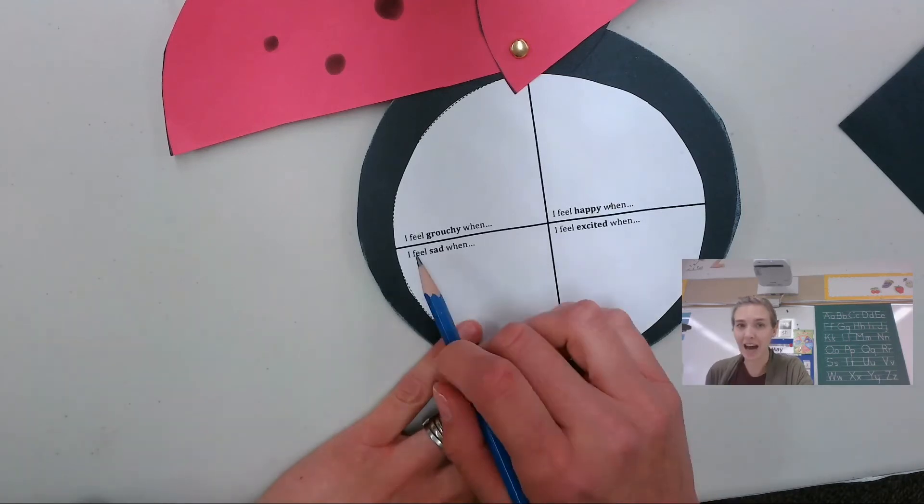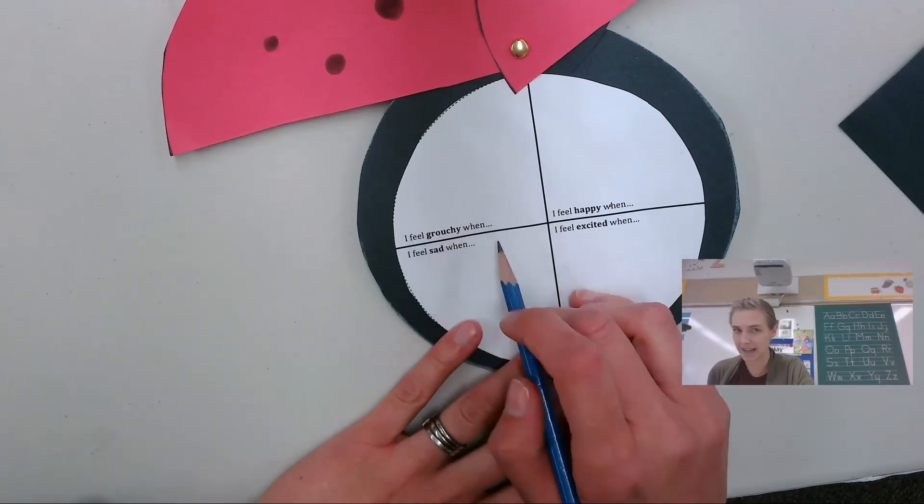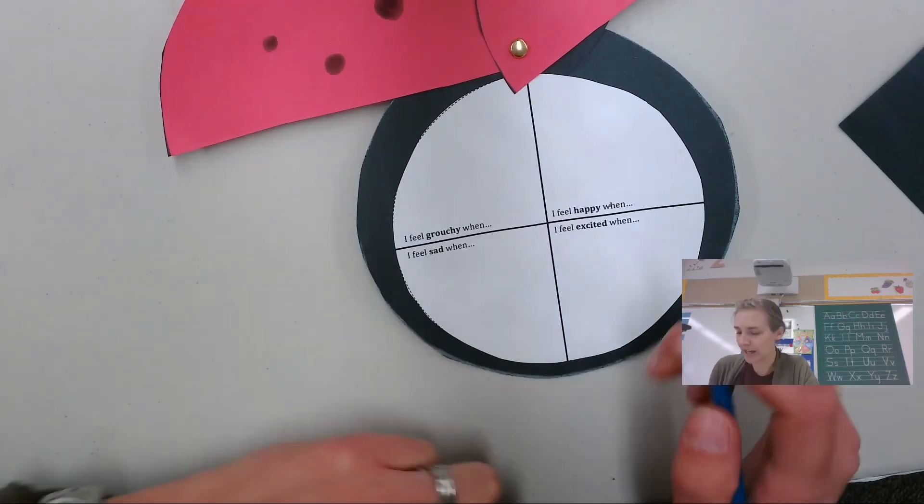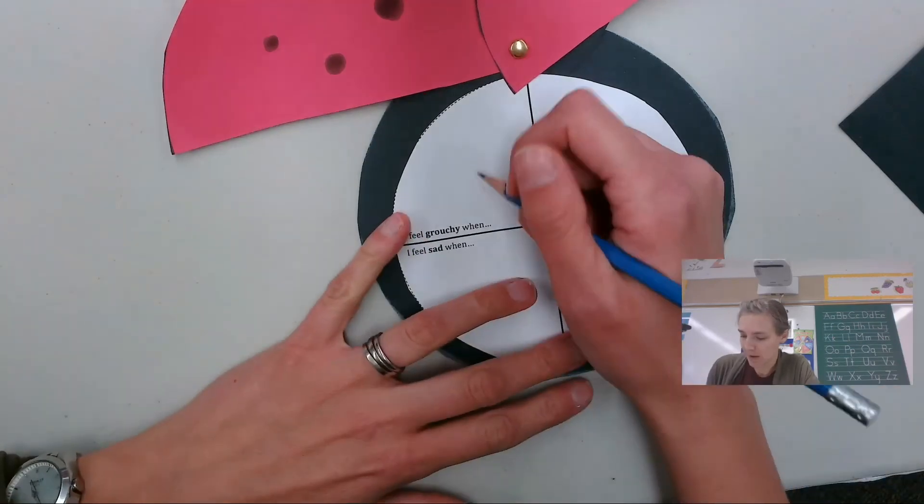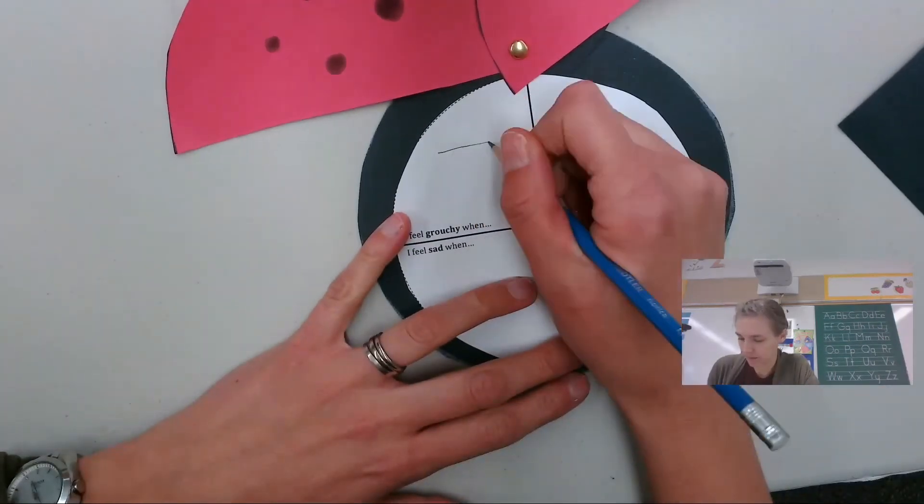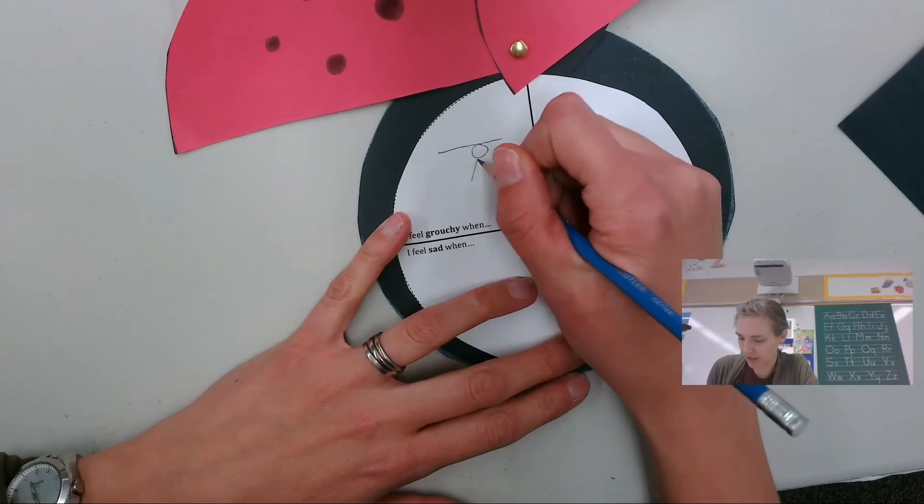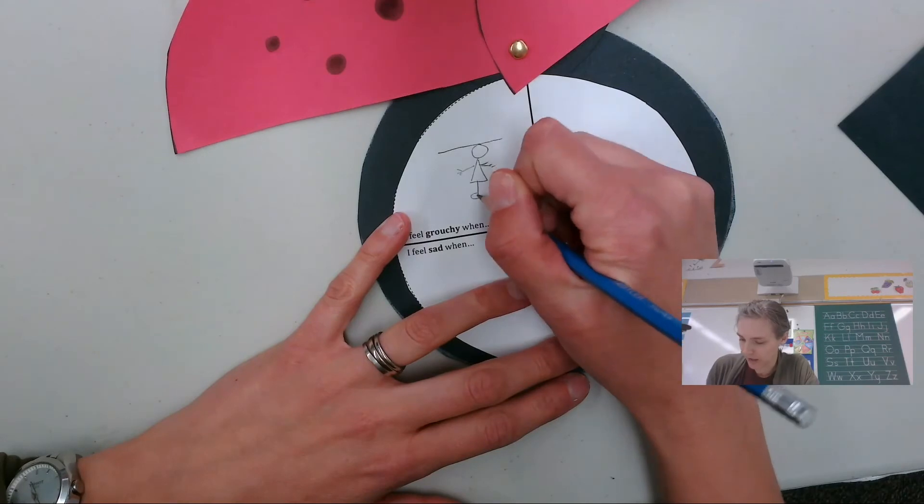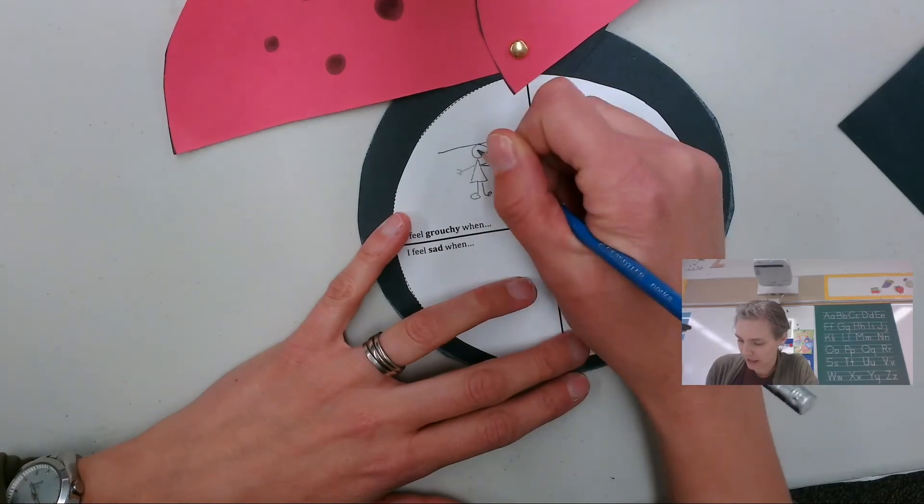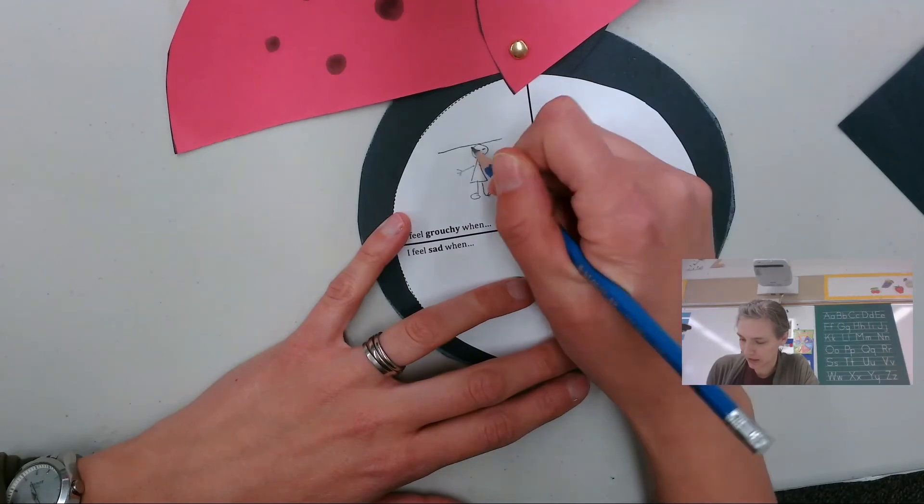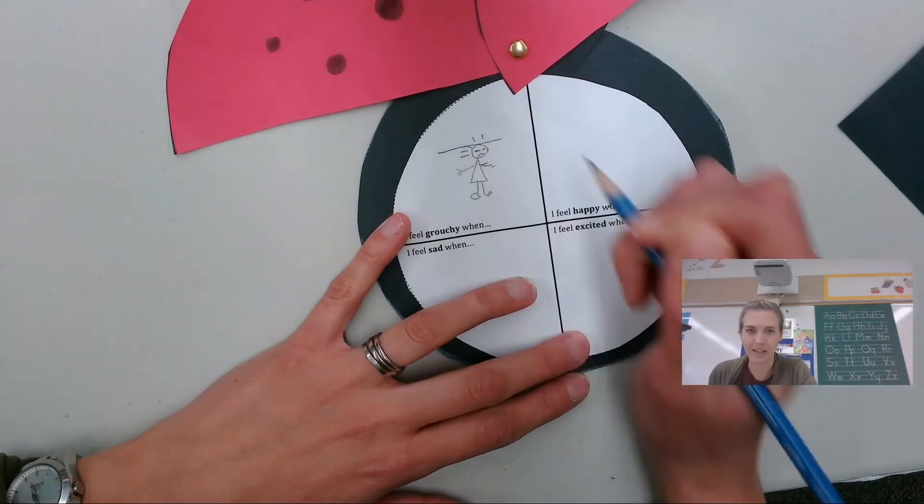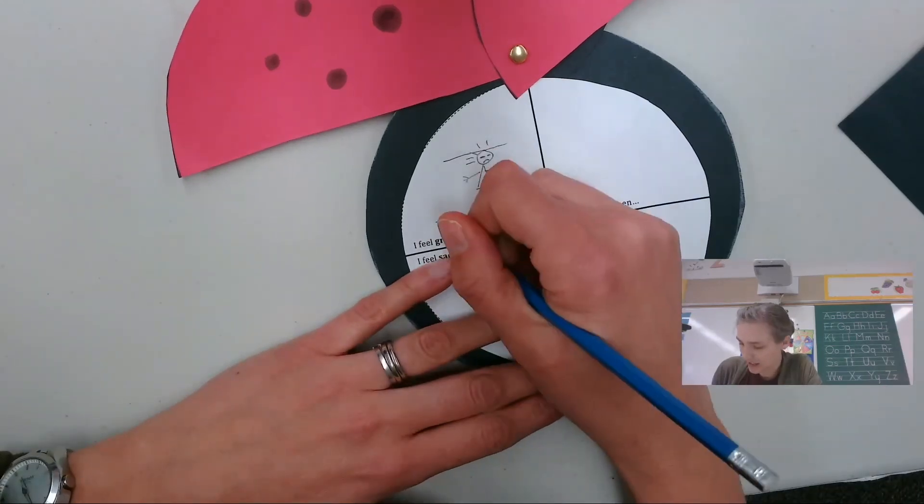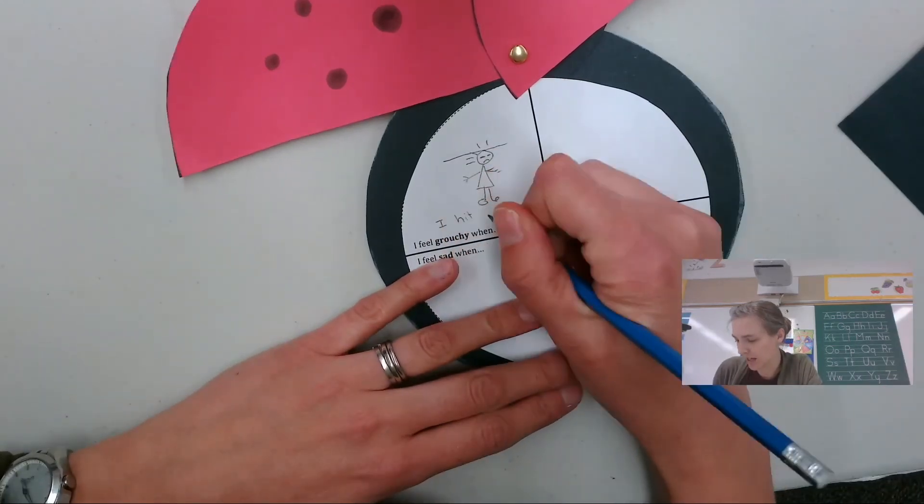So this says, I feel grouchy when. So what's something that makes you feel grouchy? Oh, I get grouchy when I hit my head. So I could draw a picture of me hitting my head. All right, I hit my head on something. And then I could write when I hit my head.